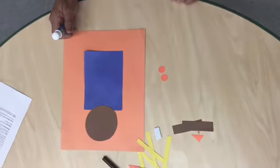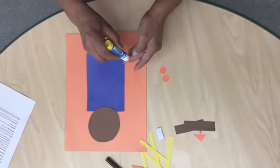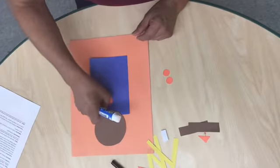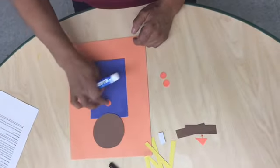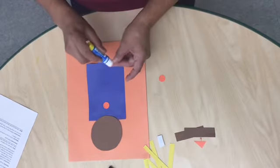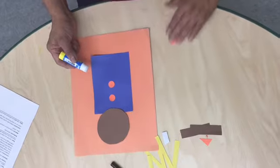Then I'm gonna get the three small orange circles and I'm gonna start on the top of my rectangle going down. Those are gonna be my buttons for my scarecrow.